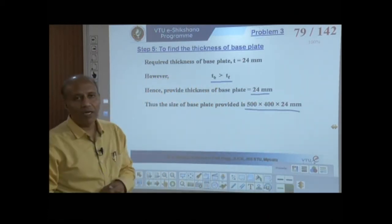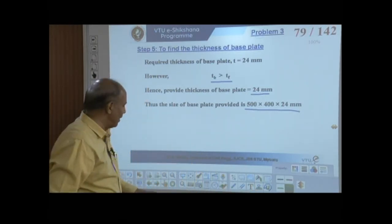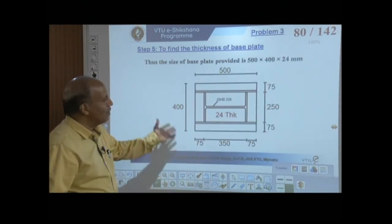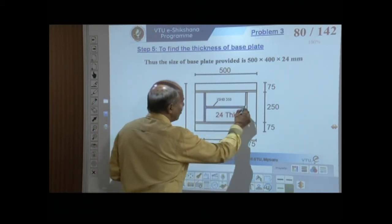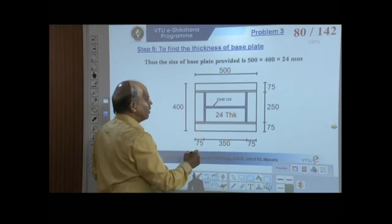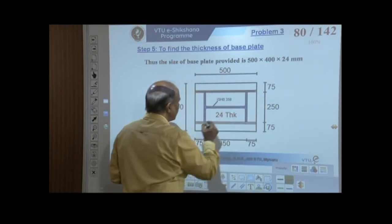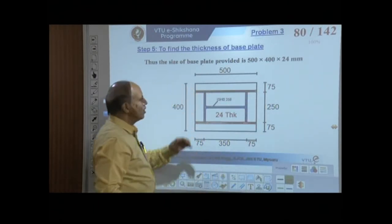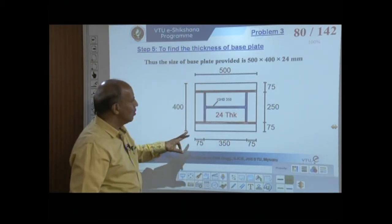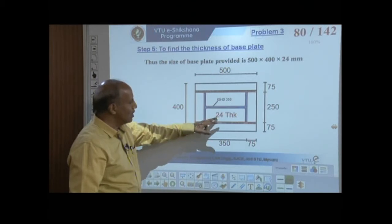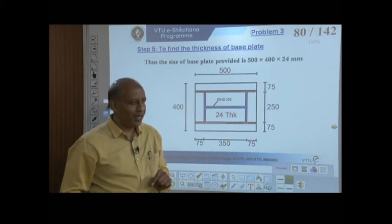The base plate dimensions are finalized as 500 mm length × 400 mm width × 24 mm thickness. The gusset plates (12 mm thick, parallel to the web) and column ISHB 350 all rest on this slab base.